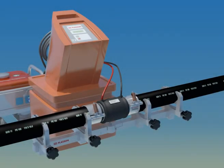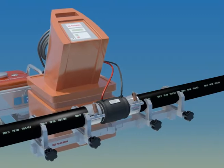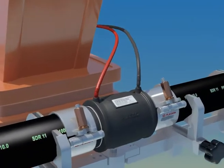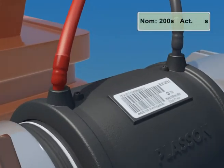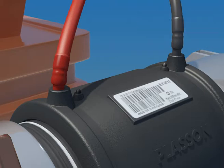For the duration of fusion and cooling, the joint is sensitive and should be left undisturbed. Leave the clamps and re-rounders in place. At the end of fusion, you may carefully remove the terminals, making certain not to move the fitting.